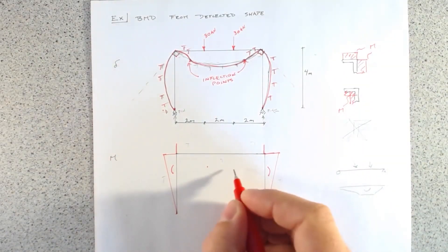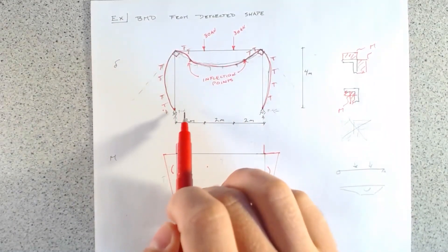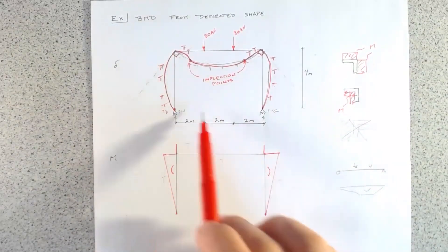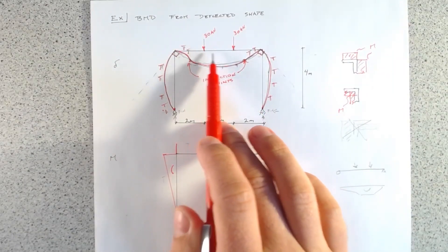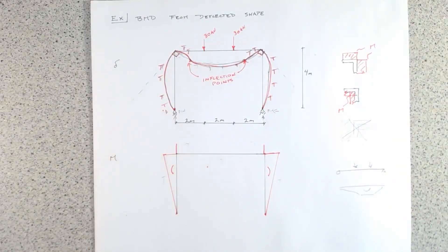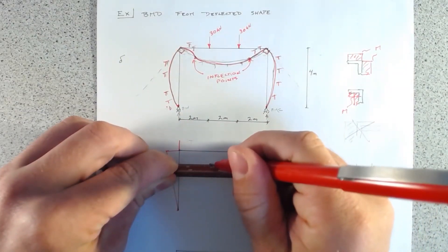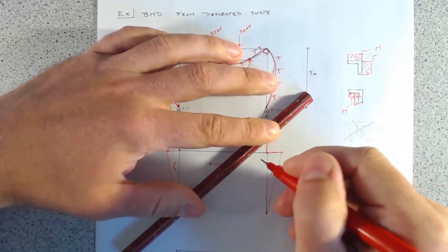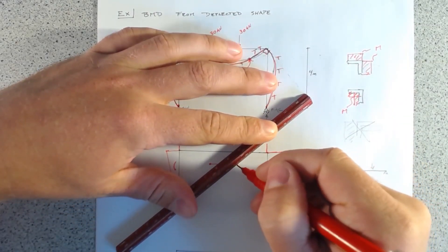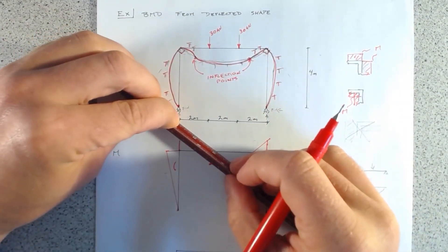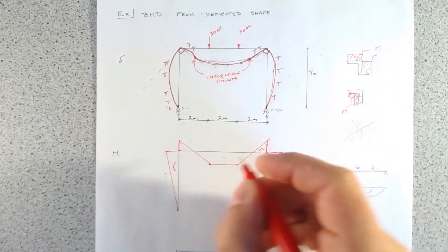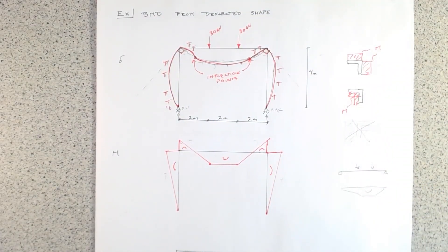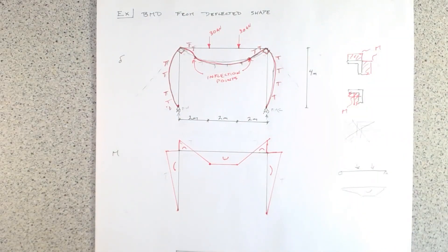So that's how we draw the bending moment diagram for the beam. A lot of this comes from understanding how simpler structures behave and applying that knowledge to more complicated frames. That's our bending moment diagram. Using the deflected shape to work out the bending moment diagram is really useful because it builds intuition — we're good at understanding how things bend and move because we've pushed on stuff before, even if the bending moment concept is new to us.